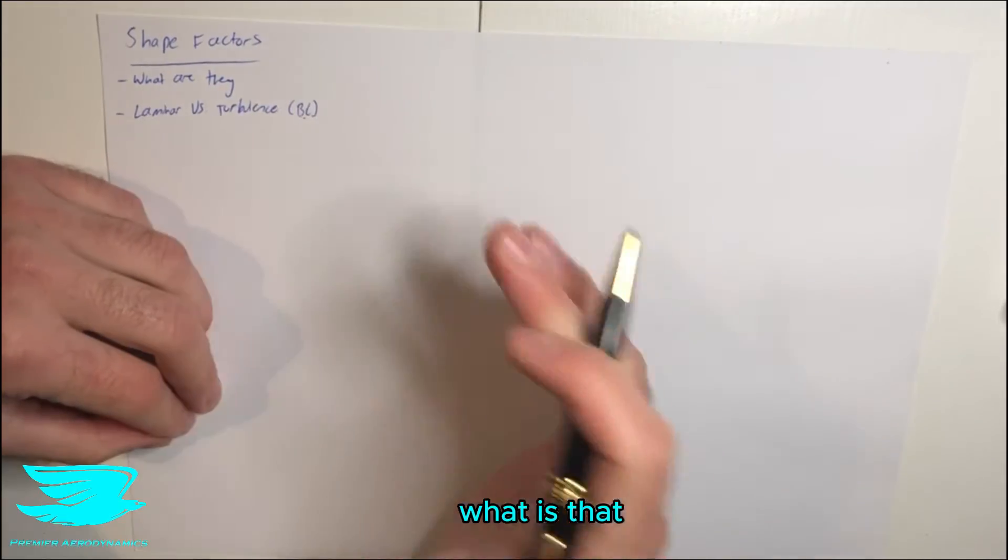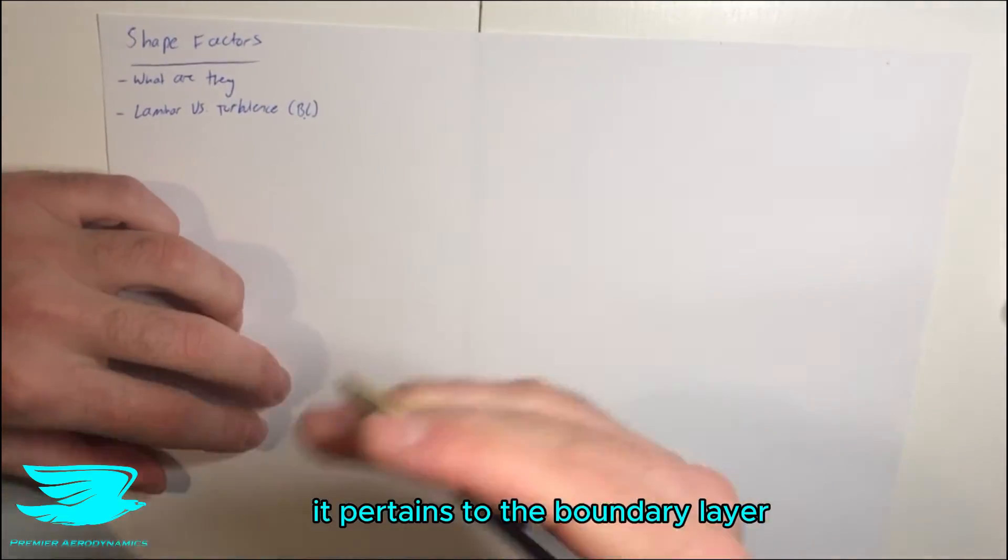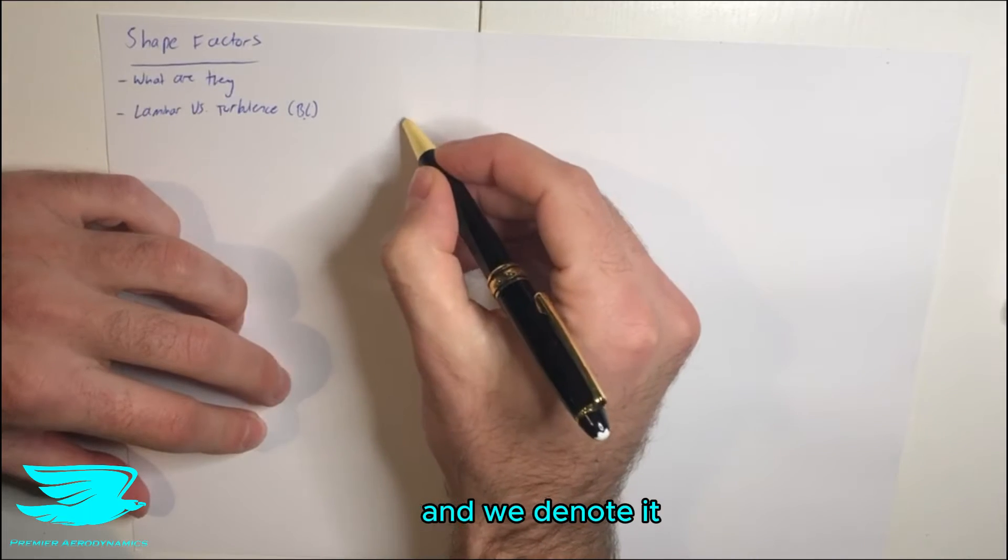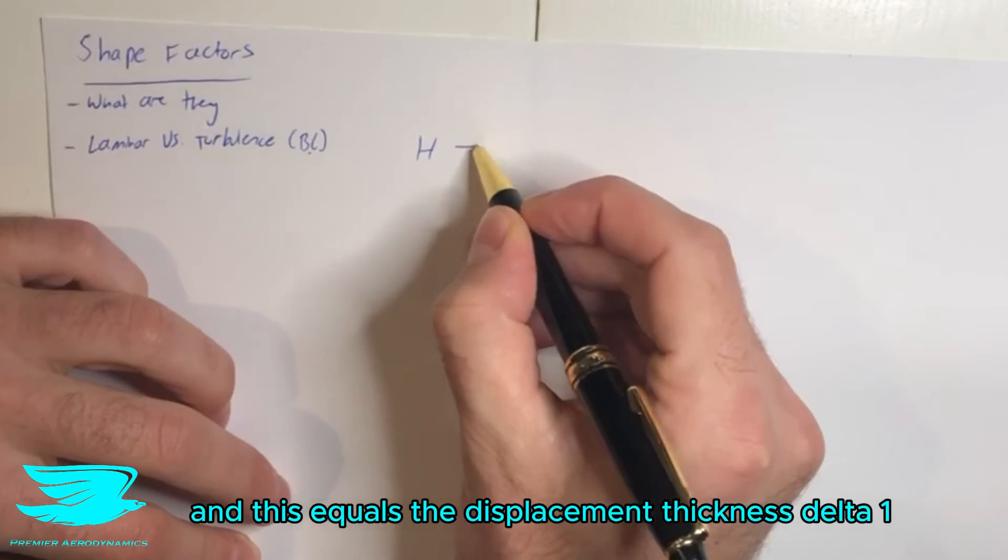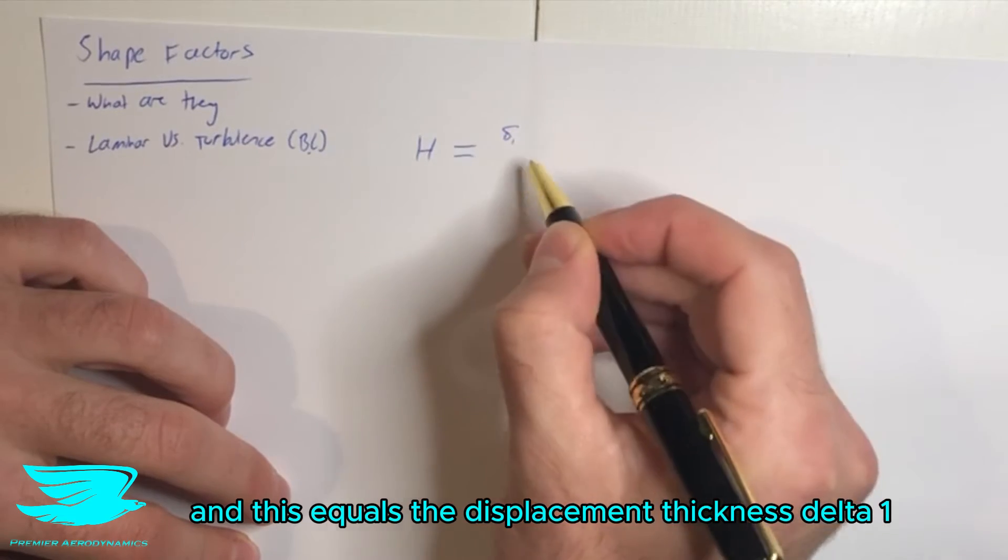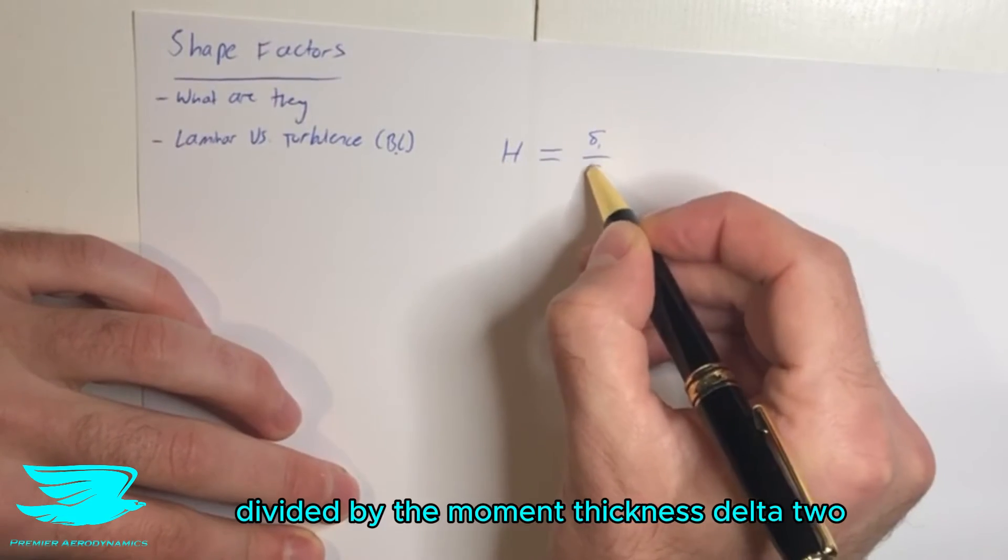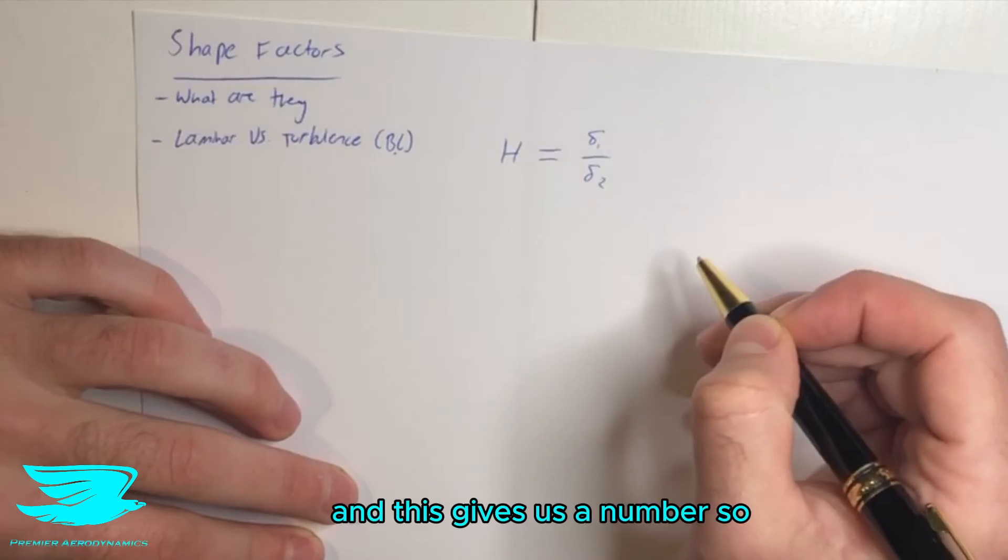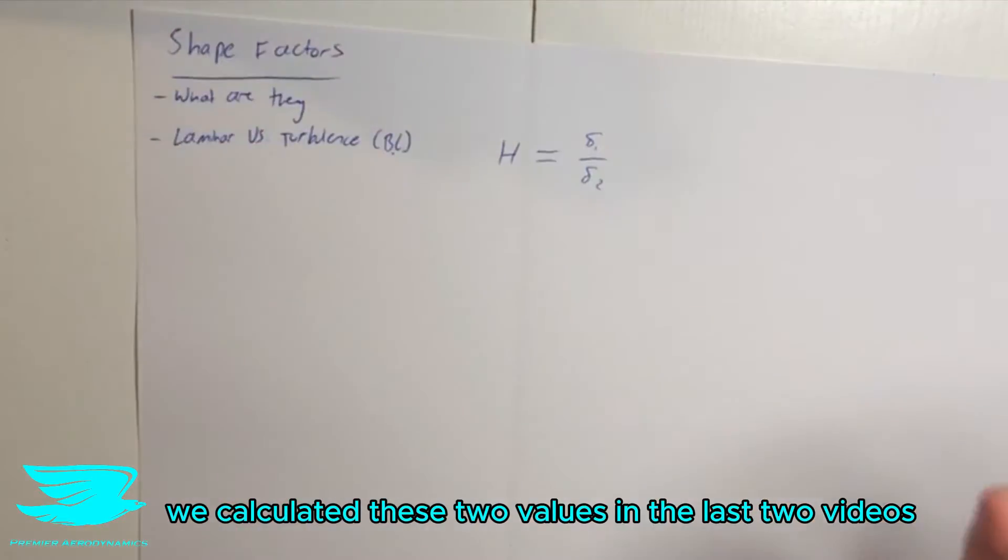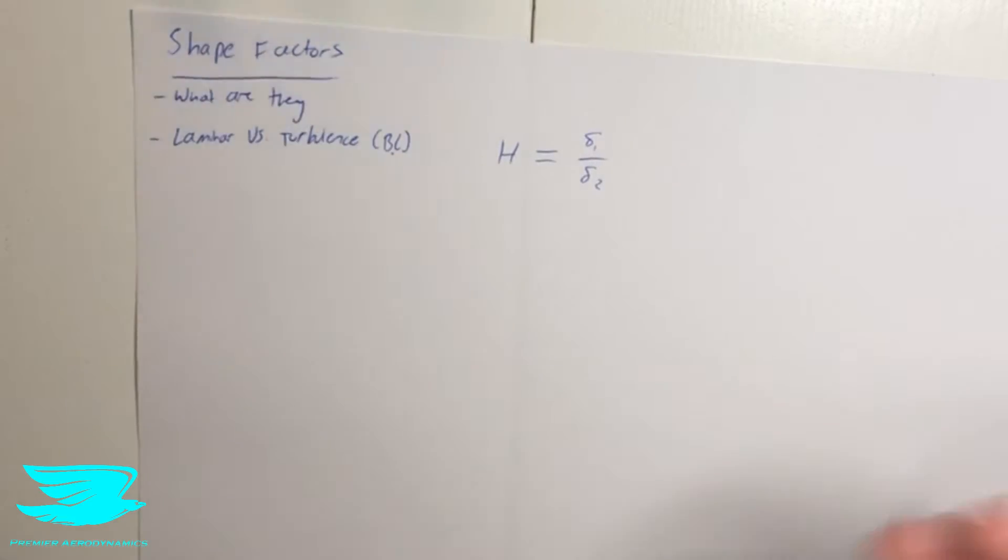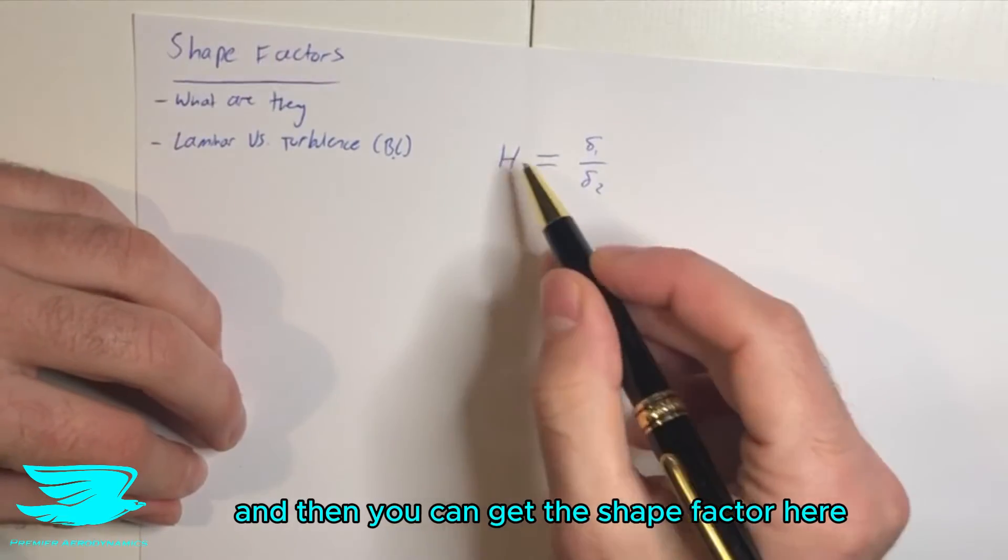So the shape factor, what is that? Well, as I mentioned, it pertains to the boundary layer, and we denote it by a letter H. And this equals the displacement thickness, delta 1, divided by the momentum thickness, delta 2. And this gives us a number. So we calculated these two values in the last two videos, the equations we gave and how to do that. And then you can get the shape factor here.